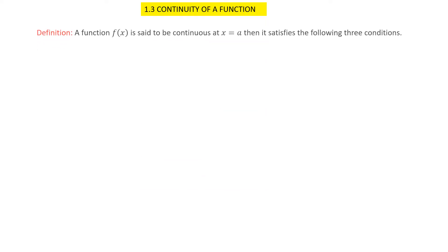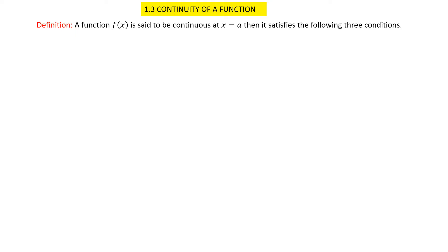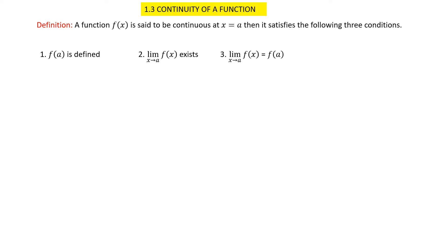In this video we are going to talk about continuity of a function. Let me define the continuity of a function f at x equal to a. A function f is said to be continuous at x equal to a if it satisfies the following three conditions: condition one, f is defined; condition two, the limit as x approaches a of f must exist; condition three, the limit as x approaches a of f(x) must equal f(a).